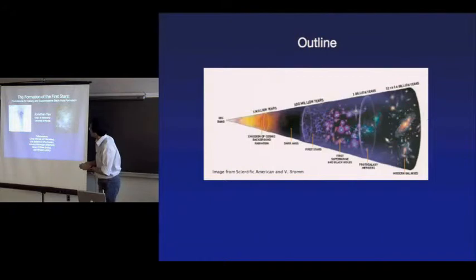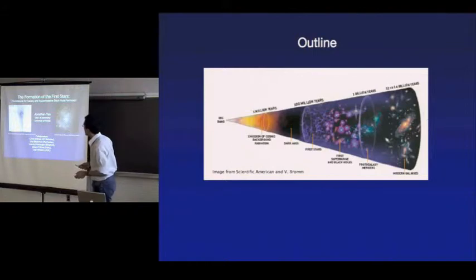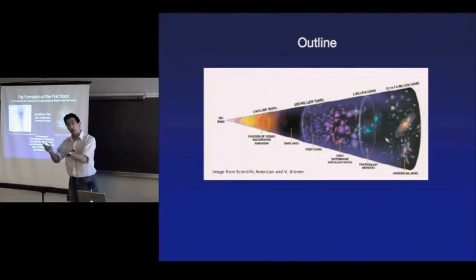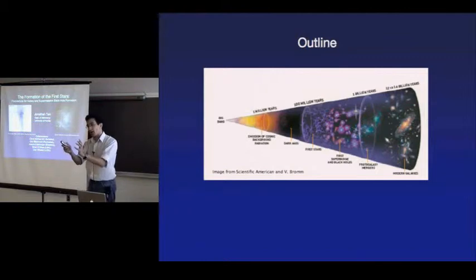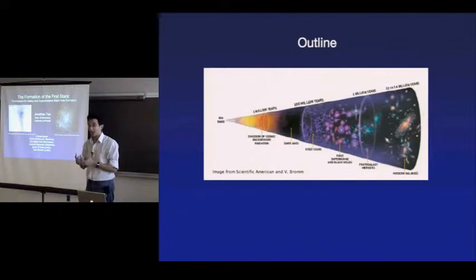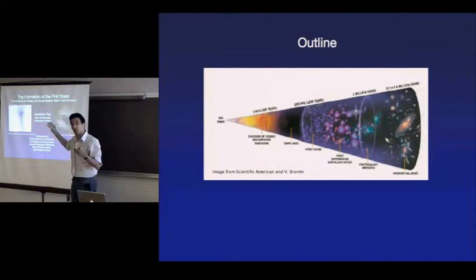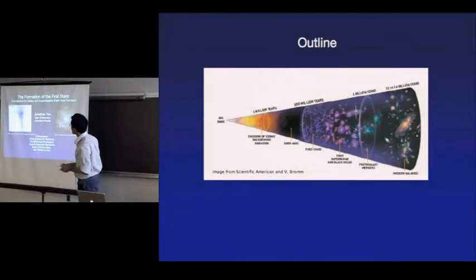What I show on the left is a theorist's or numericist's view — a picture from a simulation by Greg Bryan, Mike Norman, and Tom Abel, from their 2002 paper, showing gas structure at about redshift 18–19 in a dark matter halo of about a million solar masses. These are called mini-halos — just about the minimum mass needed for baryons to cool and fall into and settle at the center.